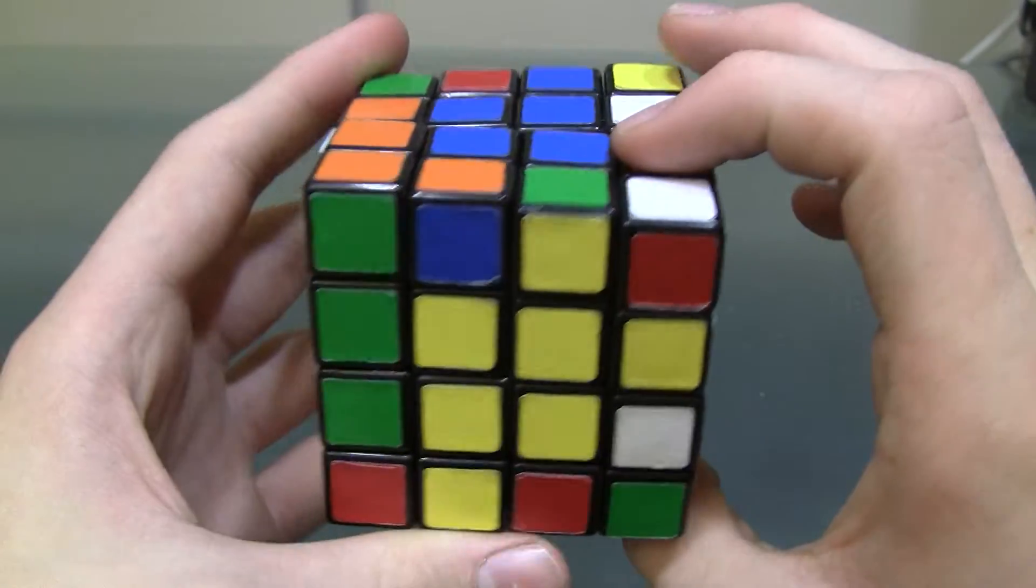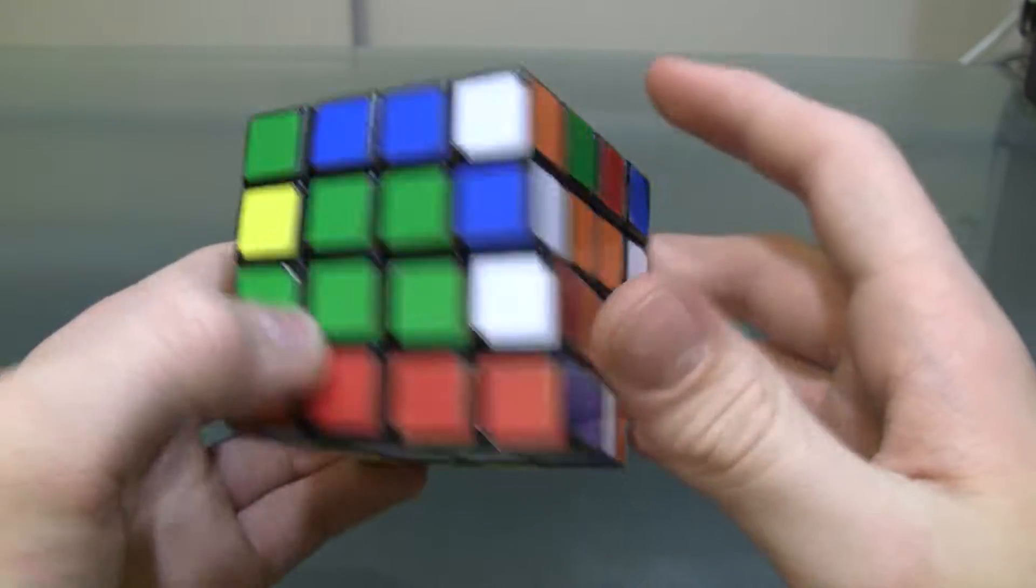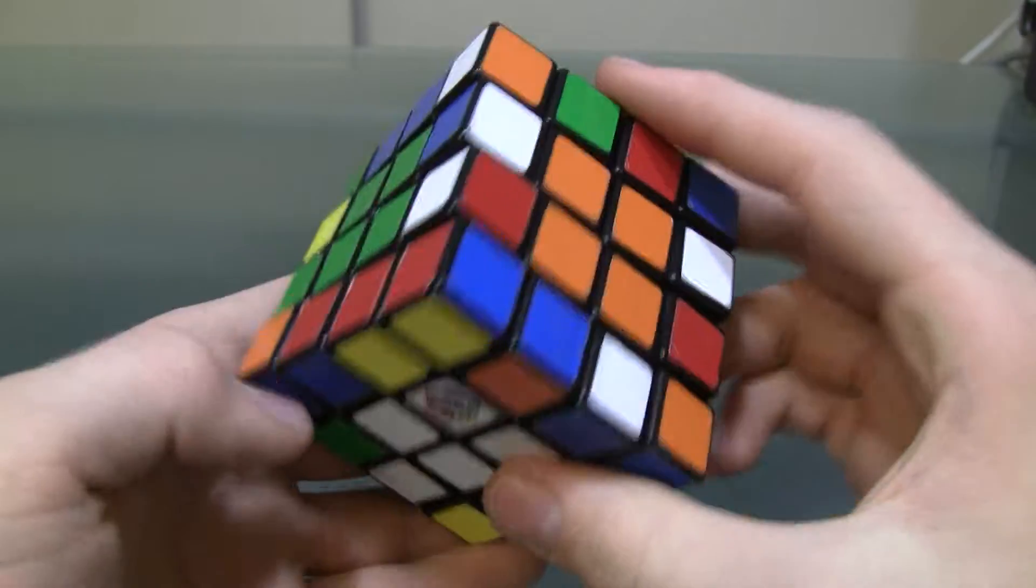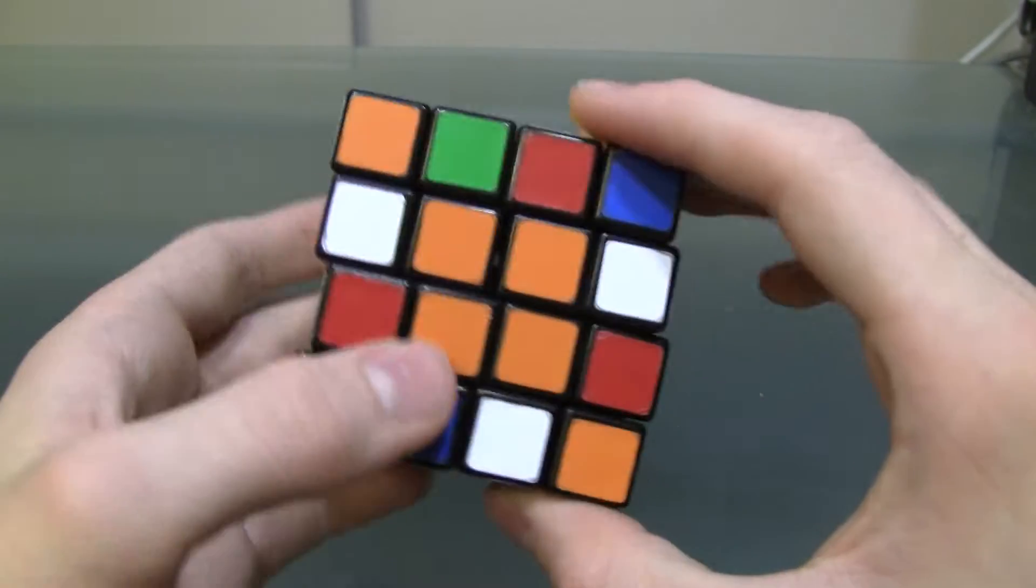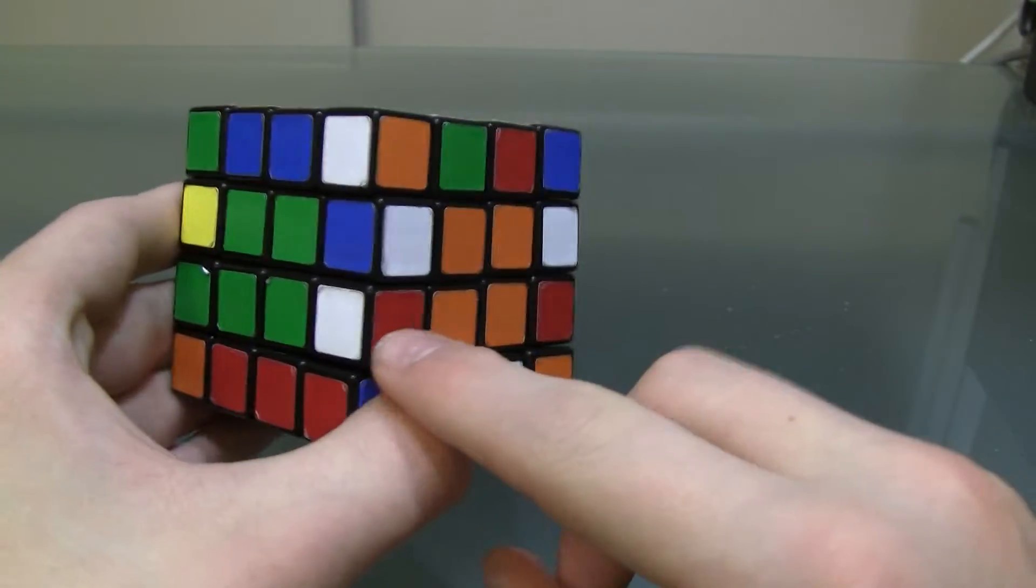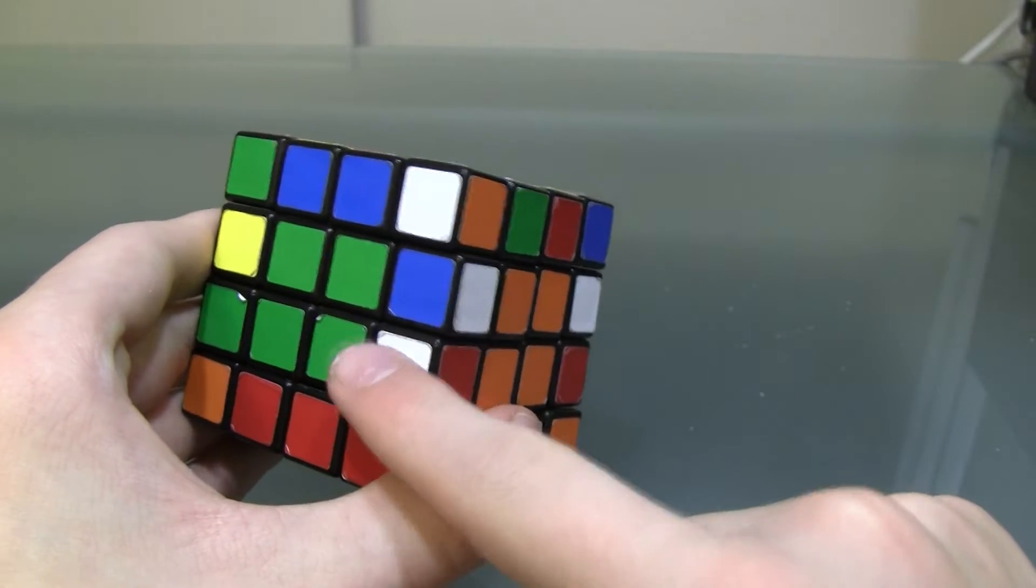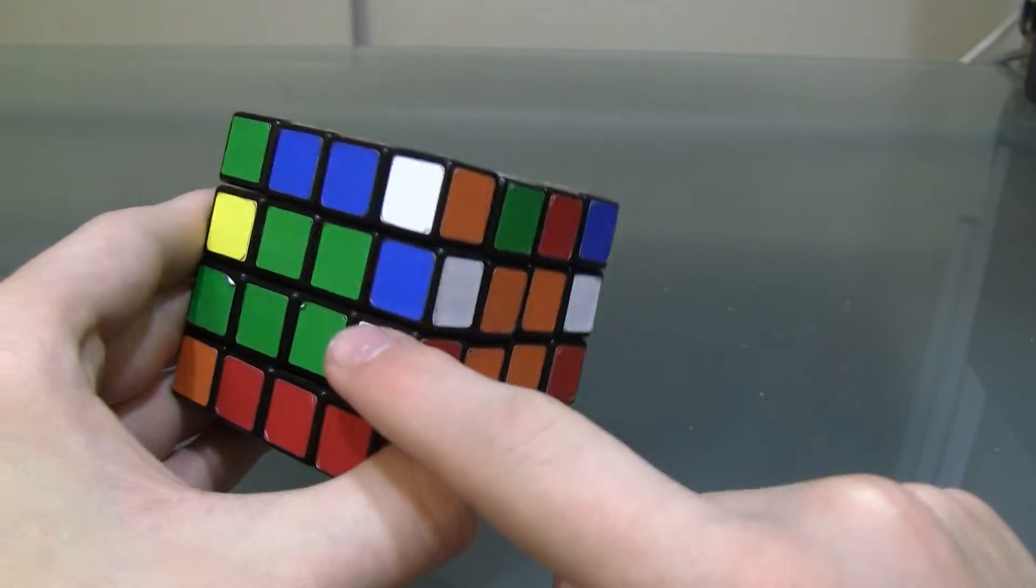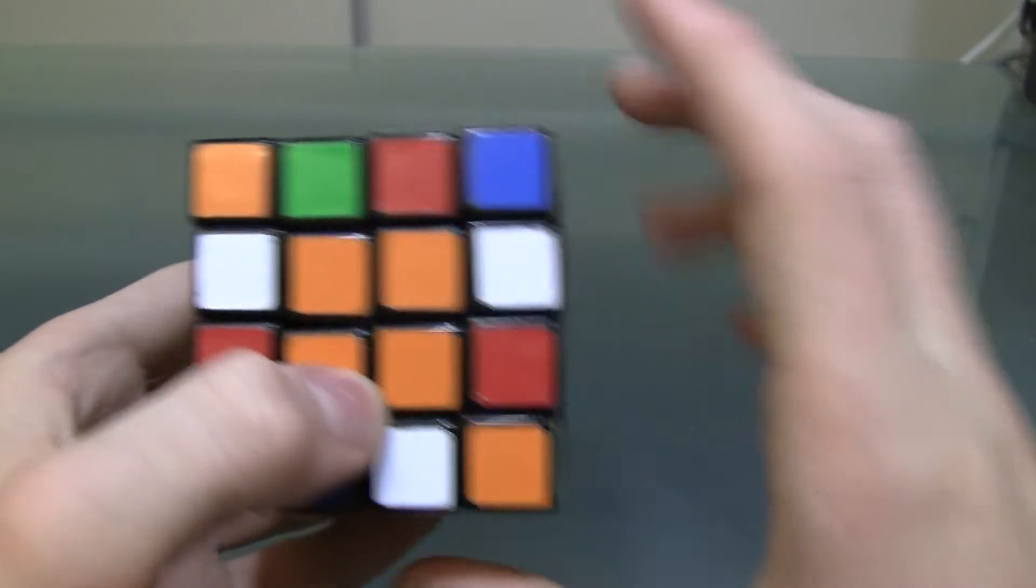And so, to pair an edge up, you first have to find two that can be paired. So, you want to look around and find two that you want to pair up. So, I want to pair up this white-red edge piece, and this red-white edge piece.